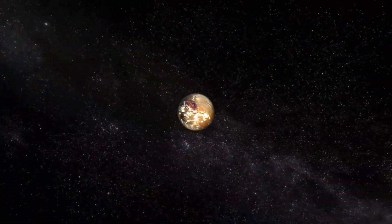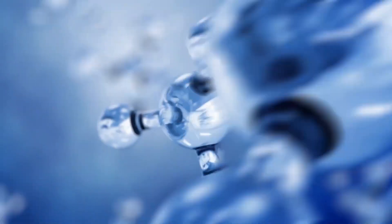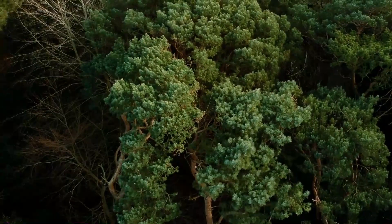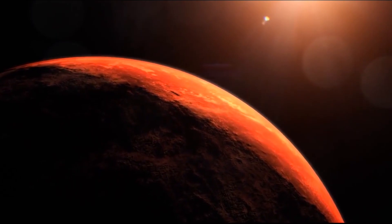Atmosphere: If Proxima b has an atmosphere, the simple ingredients, water, carbon dioxide, and rock that are needed for the formation of biochemical cycles that we call life, could all be present and interacting on the planet's surface.